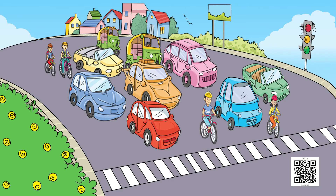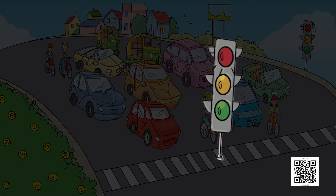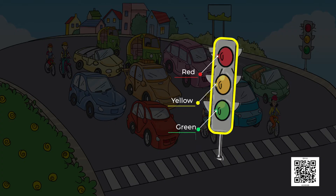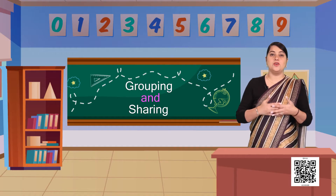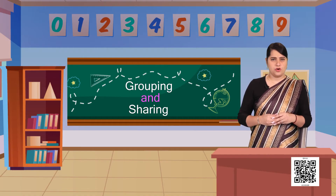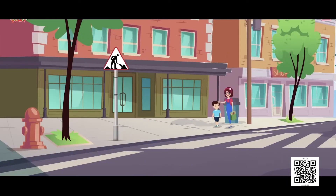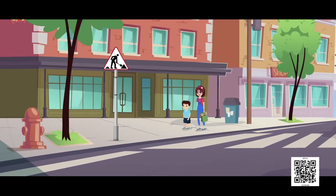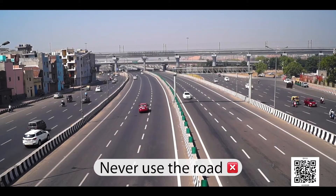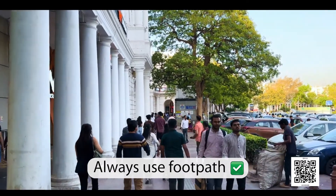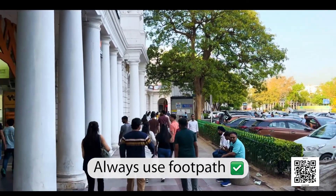When you go out, you will always observe that there is a traffic light that has red, yellow and green colour. You should always walk when it is green for the pedestrians — the people who can cross the road. And where to cross the road from? Always use the zebra crossing. Also, whenever you are walking near the road, use the pavement. Never use the road because the road is for the vehicles and the footpath is for us. Always use the footpath while walking.